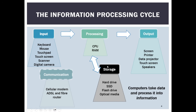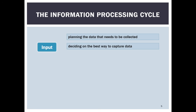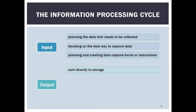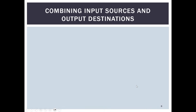In our information processing cycle, input involves planning the data that needs to be collected, deciding on the best way to capture that data, and creating data capture forms. Output deals with sending data directly to storage, communicating it to other computers, using it as input for other programs or systems, or using it to control equipment or devices.